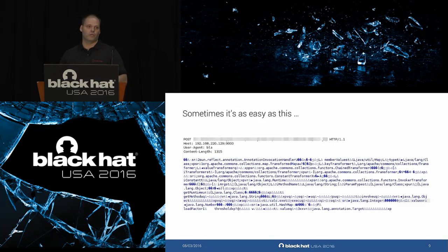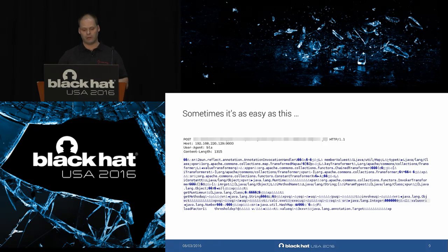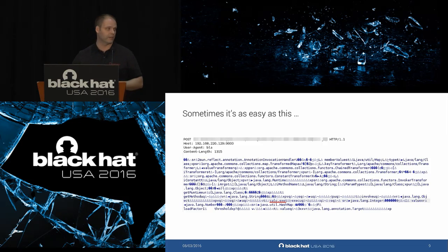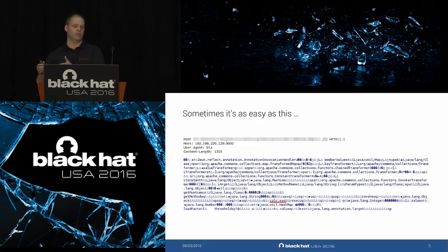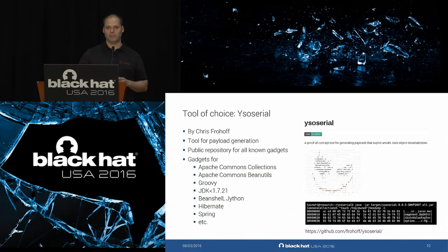Exploiting deserialization vulnerabilities can sometimes be as easy as sending an HTTP POST request to the target server — in this case Oracle Hyperion, an API product of Oracle — using a Commons Collection gadget with a `calc.exe` embedded. Whenever this gets deserialized on the server side, calc.exe pops up. To make exploitation easier, Chris Frohoff created a great open source tool called YSO Serial, hosted on GitHub. It serves as a public repository for all known gadgets — currently about 15, including Apache Commons Collections, Apache Commons BeanUtils, Groovy, JRE gadgets, BeanShell, Jive, Hibernate, Spring, and others.